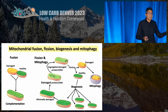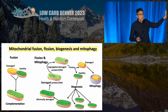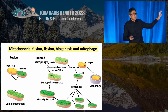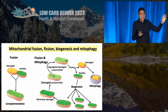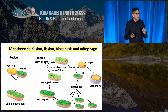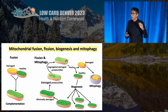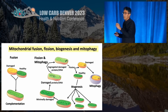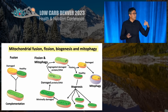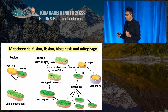Mitochondria try their best to protect themselves. Damaged mitochondria can fuse with a healthy mitochondria in a process called complementation so that they can work better and not generate free radicals. The mitochondria can also segregate the damaged parts, divide into a damaged daughter mitochondria and a healthy daughter mitochondria. The damaged mitochondria can then be cleared by a process called autophagy or mitophagy.